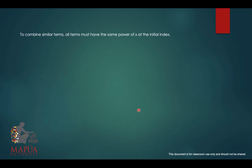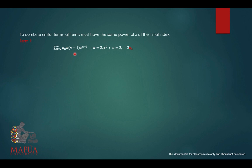To combine similar terms, all terms must have the same power of x at the initial index. We consider the highest power of x, which is x raised to 1, and compute the initial index accordingly. For term 1, the power x raised to 0 requires computing at n equals 2, so it starts at n equals 3 with power x raised to 1. At n equals 2, that gives 2a_2. We then let k equal n minus 2.